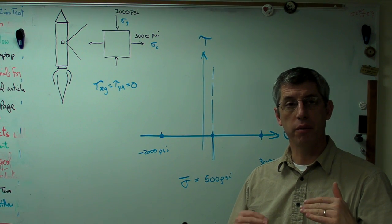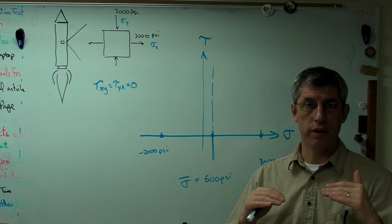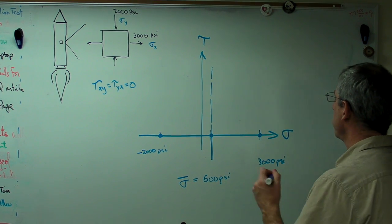Mohr's circle always lies on the tau equals zero axis. If you're drawing Mohr's circle and it's not centered on the x-axis, if the center is above or below the axis, something's wrong. So stop.